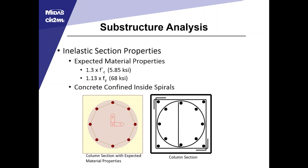For the inelastic section properties, from the Caltrans Seismic Design Criteria, we assume 1.3 times the concrete compressive strength and a steel yield strength of 68 KSI. For architectural reasons, we had a 24-inch square column with number 4 bars on the outside to provide some confinement to the cover in the corners. However, they were not considered to provide seismic confinement — they weren't detailed using seismic detailing and weren't spaced appropriately, so they were neglected.